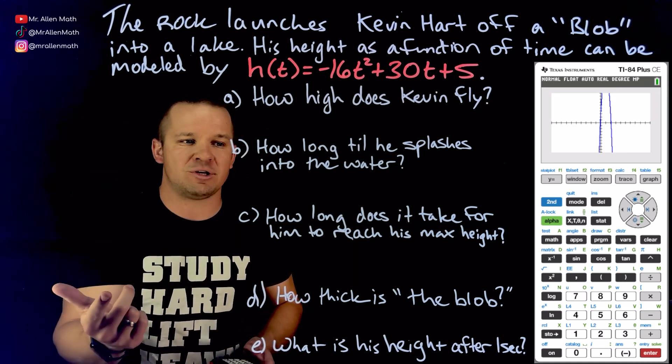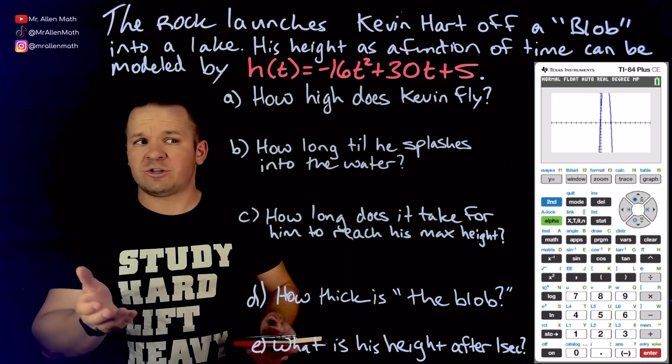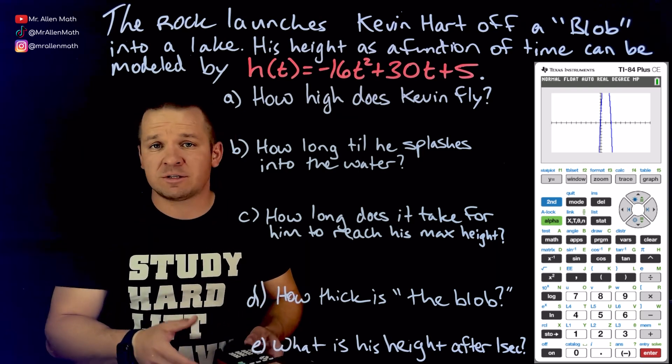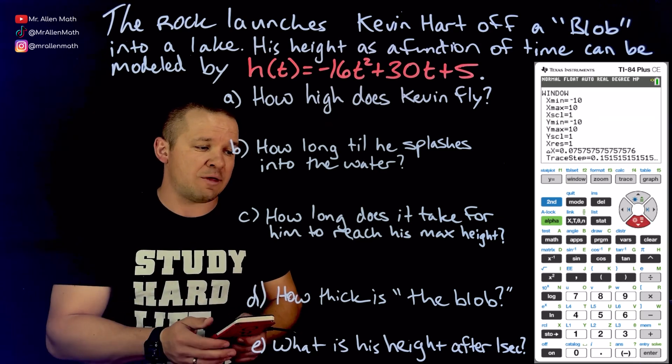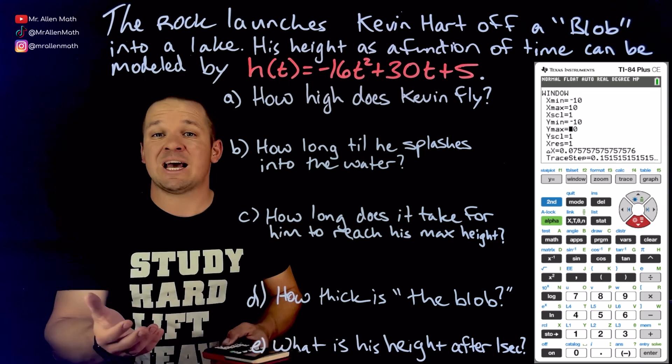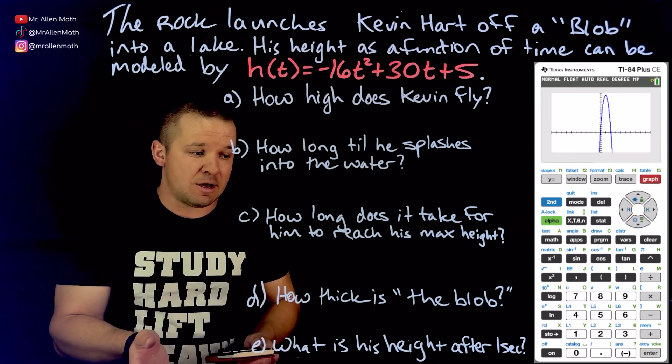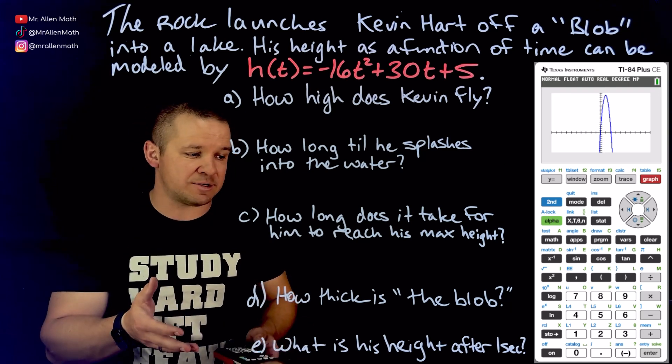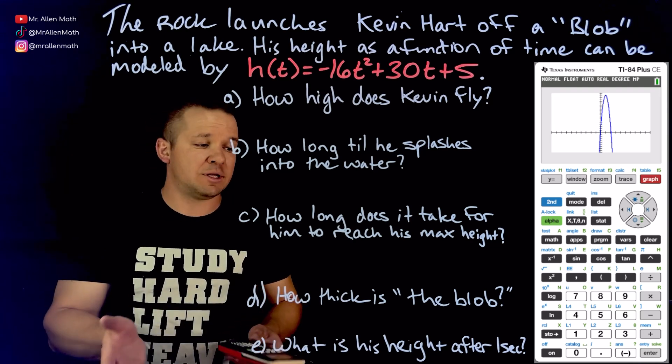And I guess question C as well, how long does it take for him to reach that max height? So A and C are going to play off that max. So let's adjust our window. There's different ways to do this. Some will choose to zoom out. I choose to go to window, and then I'm going to arrow down to my Y max because I want to see higher up. And I'm just going to guess. I'm going to pick 20. I don't know if that's the best choice, but we'll see what happens. Cool. I can see the high point. I can see my X intercepts. Those are all key features. Y intercept is also a key feature.